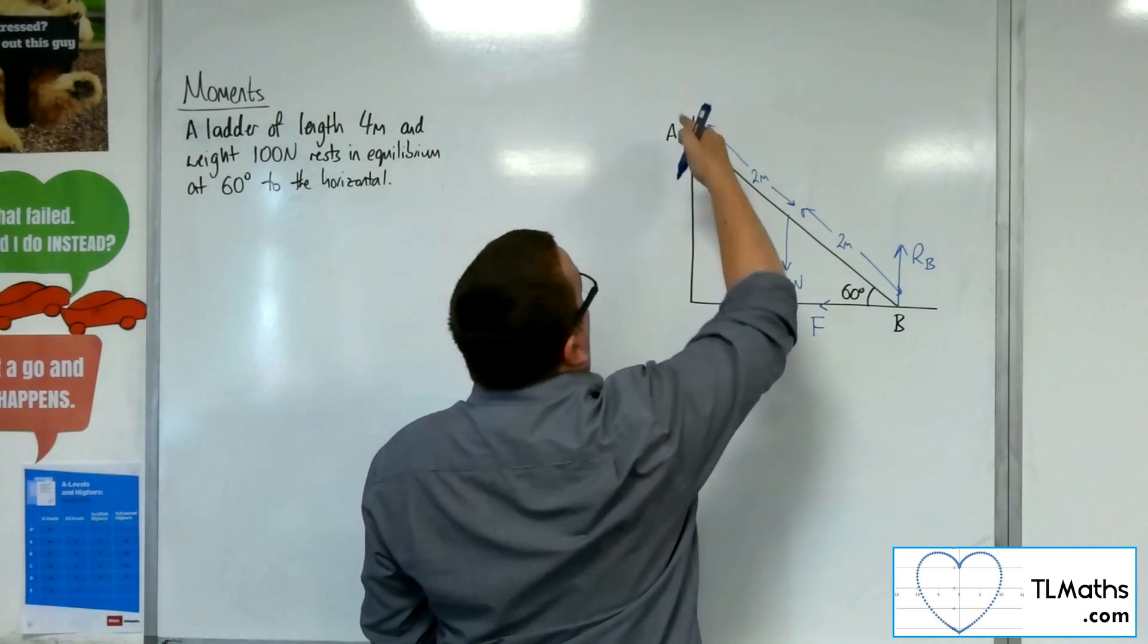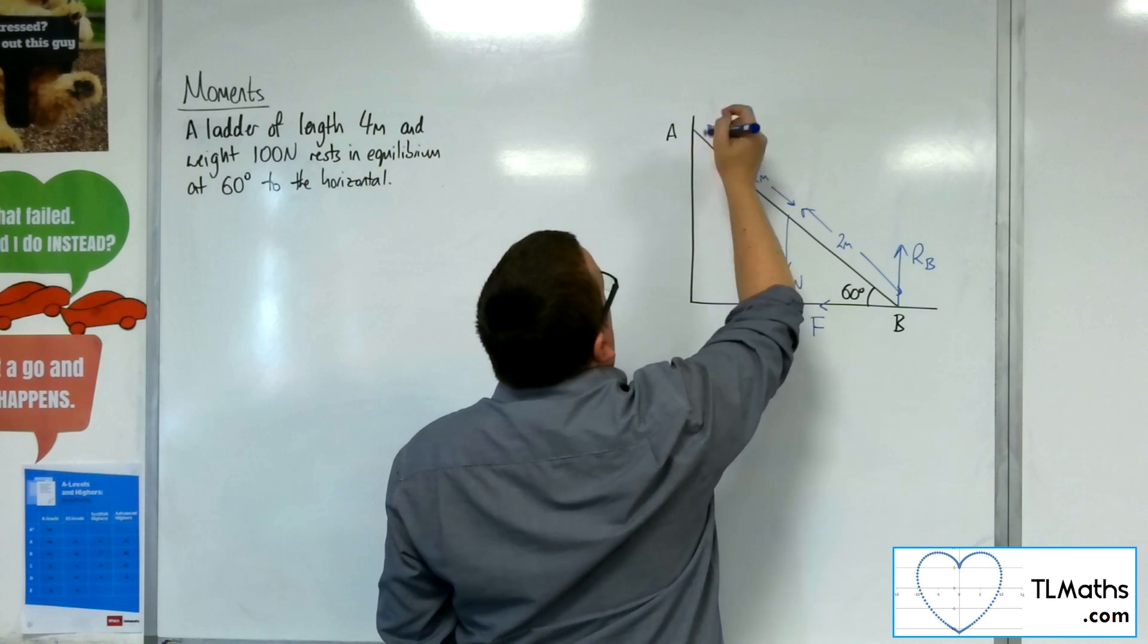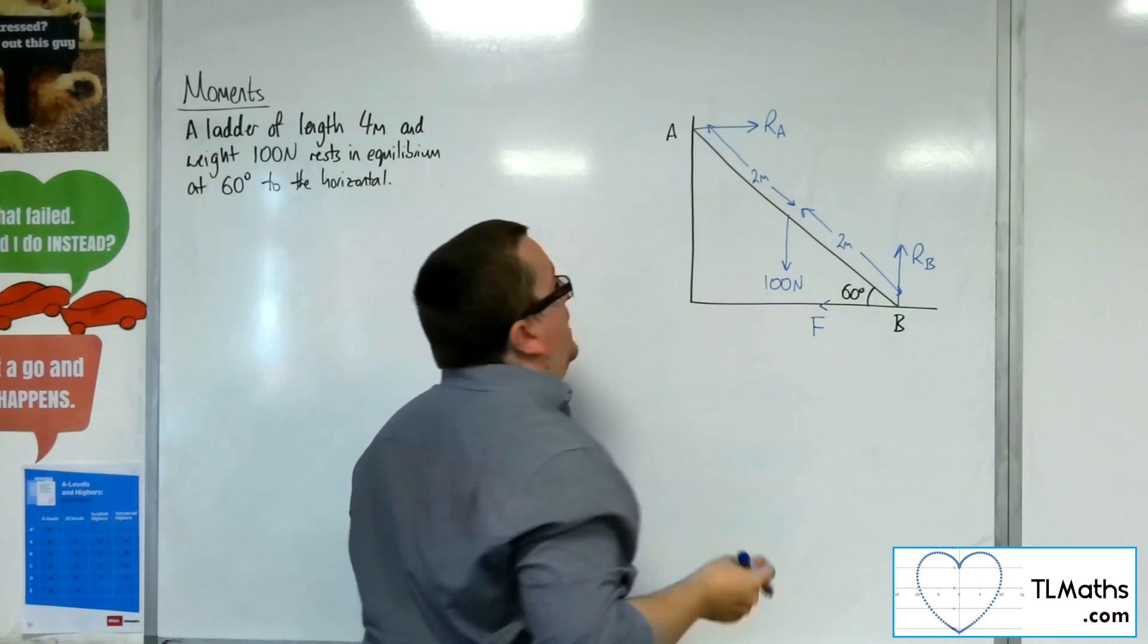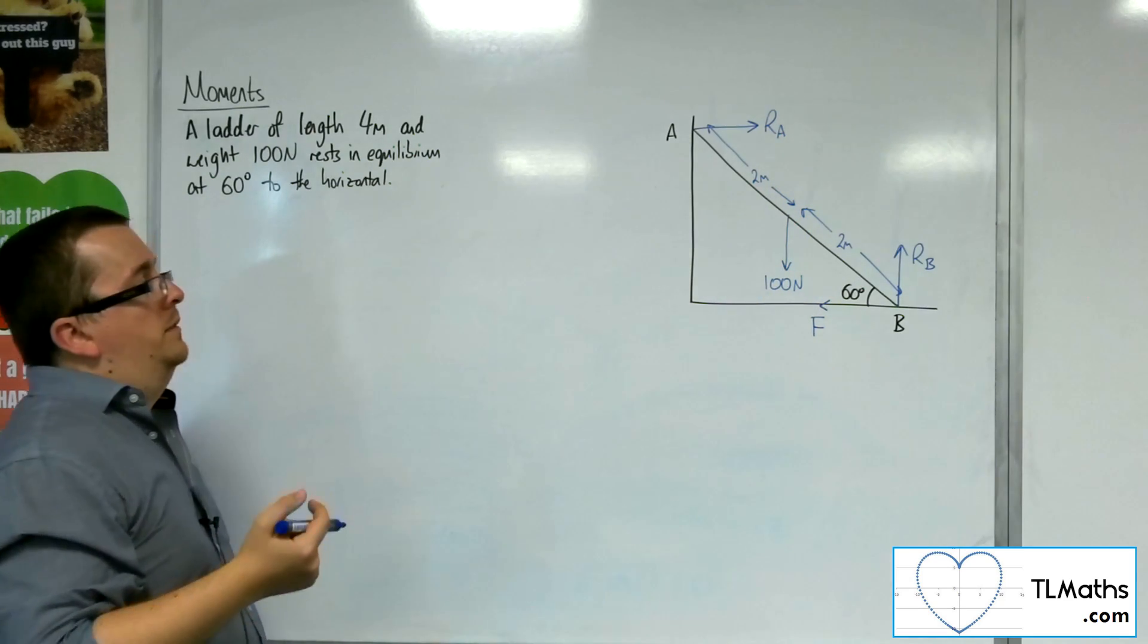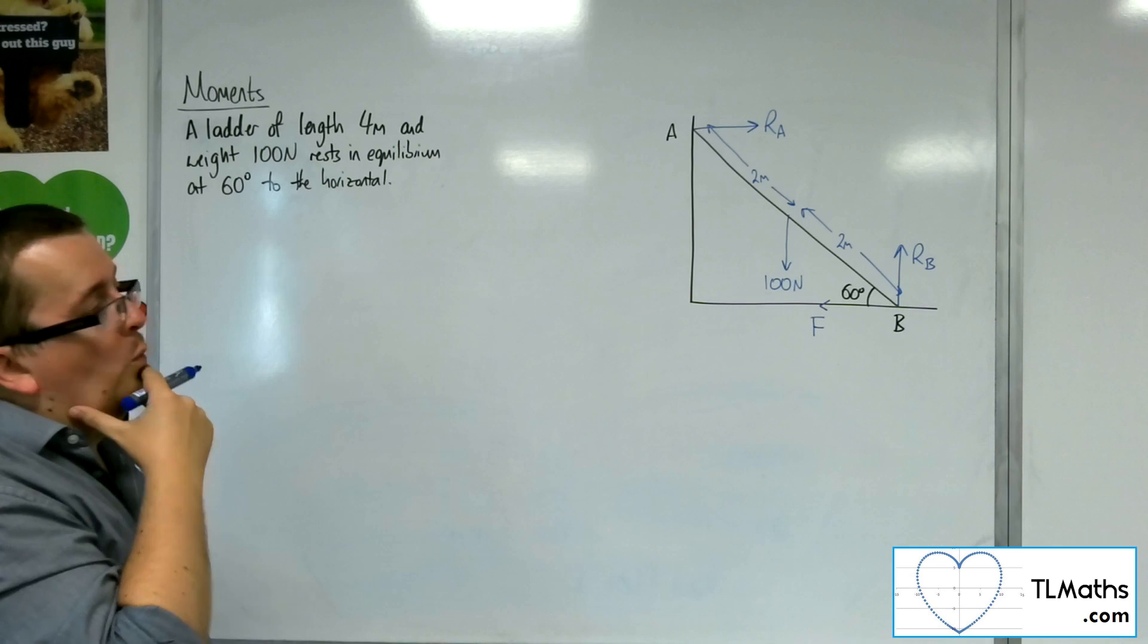Now, as for upper A, there's no friction in the wall. However, there will be a normal reaction force. We're going to label that as RA. So that's currently what we've got.